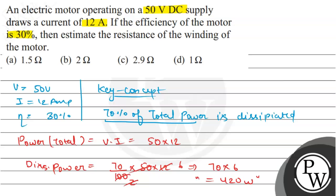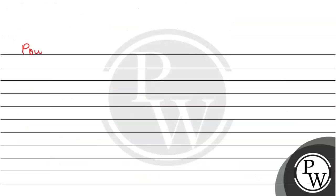So 420 watt is the total dissipated power and now we have to calculate resistance. So let's move on to the next page.